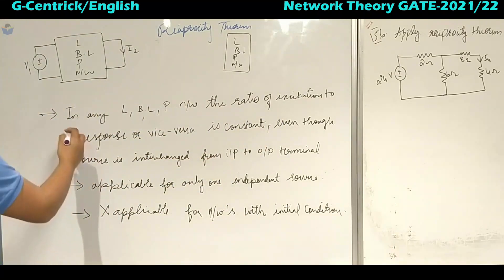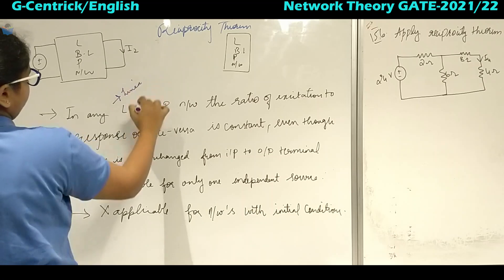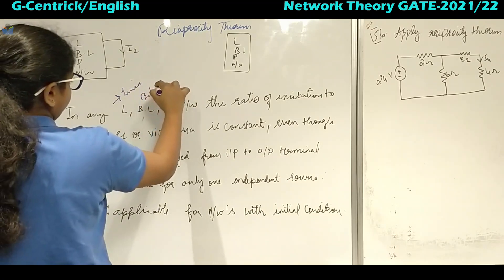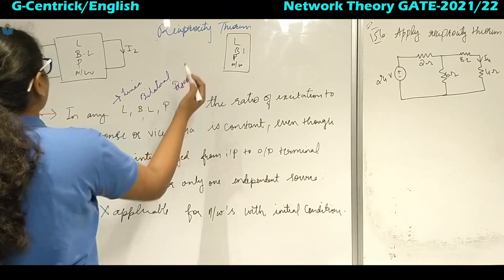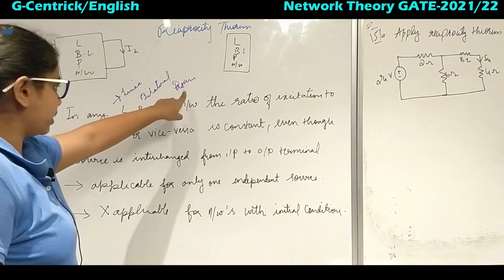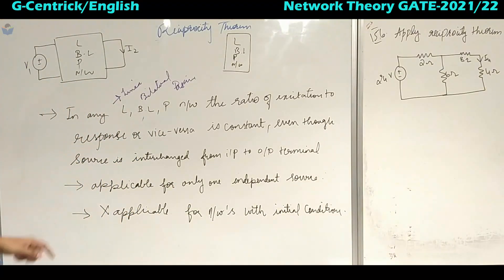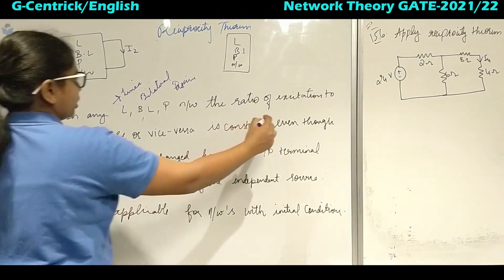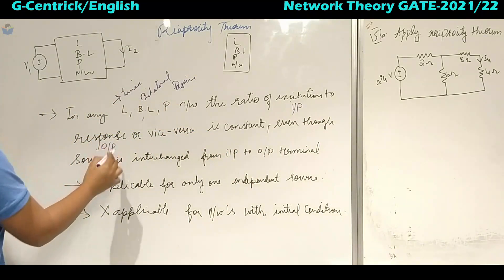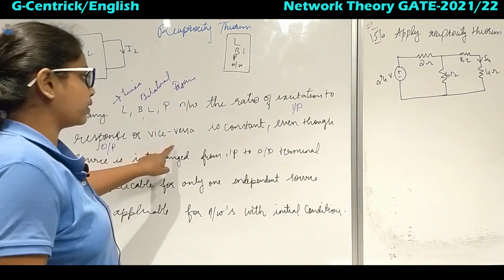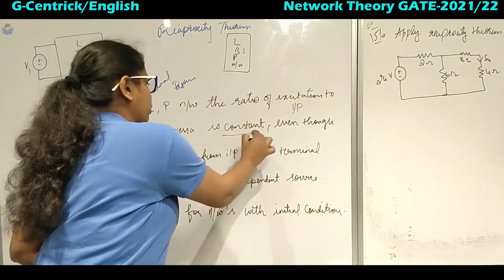So basically, L represents for linear, BL represents for bilateral, and P for passive. So in any linear bilateral passive network, the ratio of excitation to response — excitation is the input, response we can call it as output, or vice versa — the ratio of response to excitation is constant.